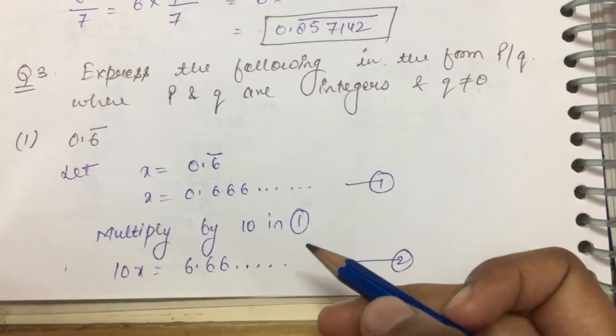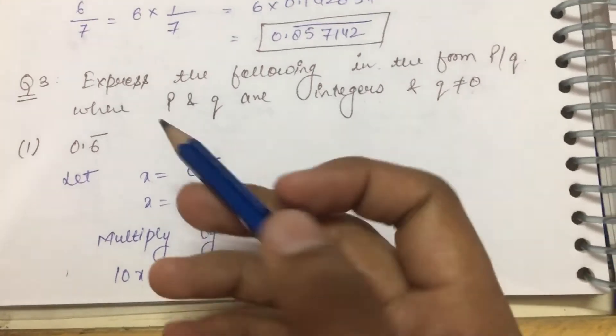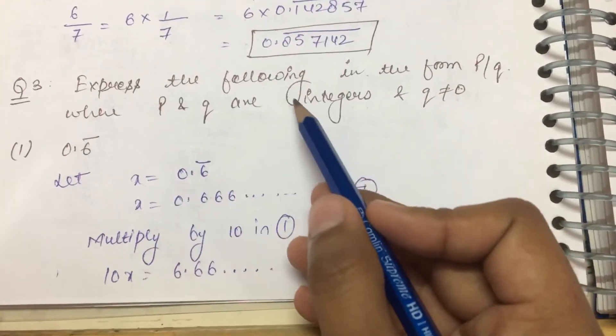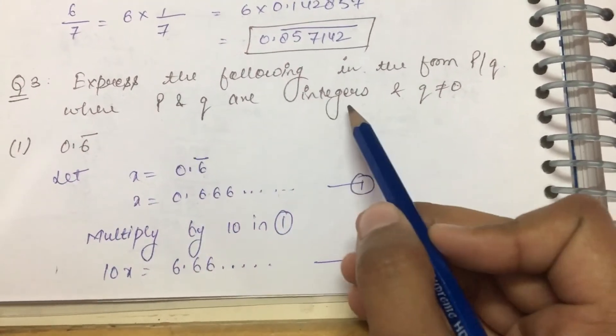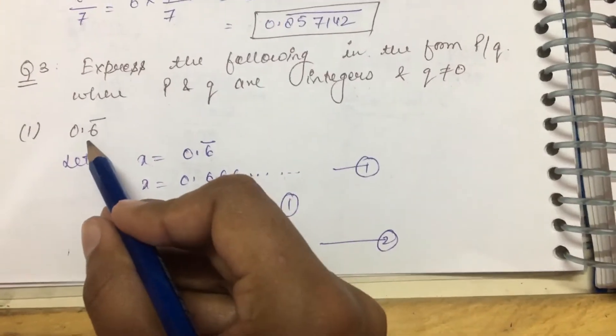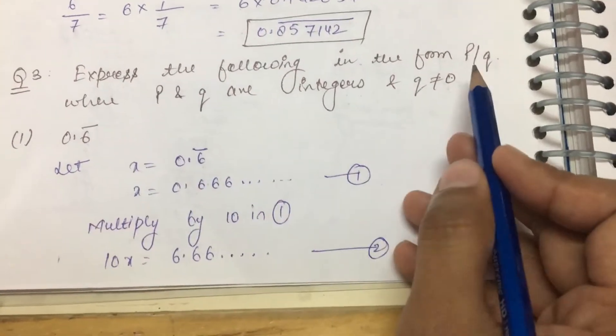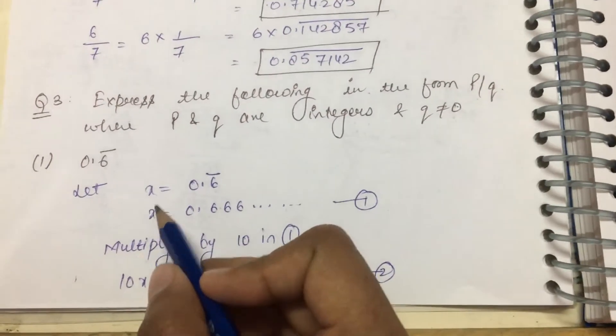Hello students, this is question number 3 of exercise 1.3 of class 9th. The question says express the following in the form of p by q where p and q are integers and q is not equal to 0. So first part is 0.6 bar.